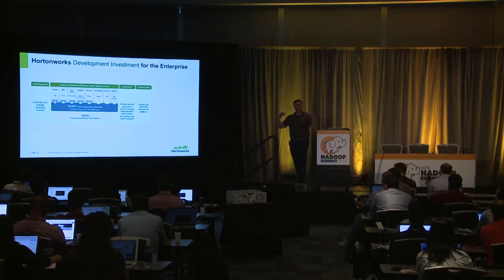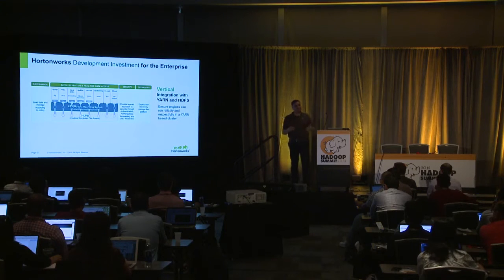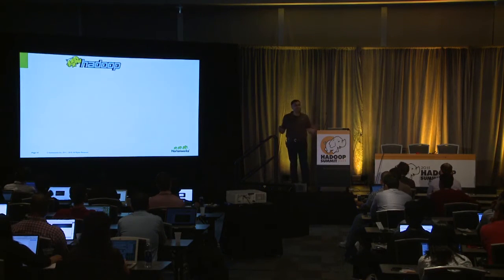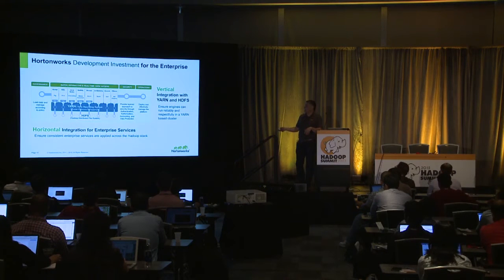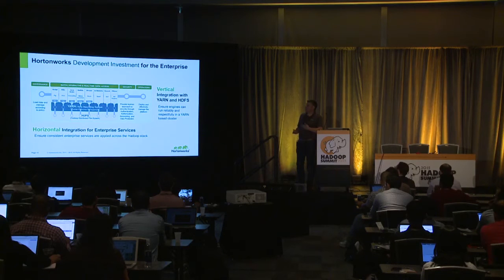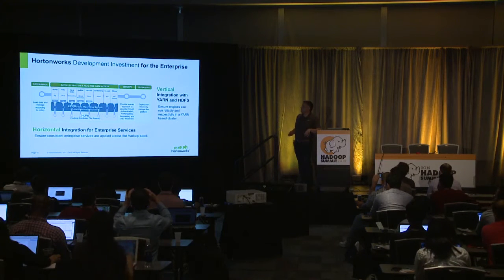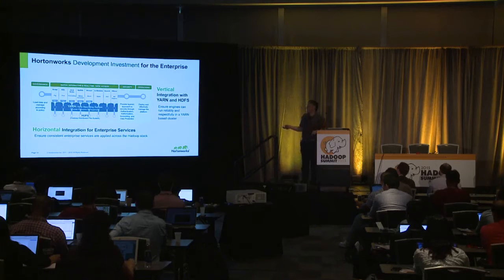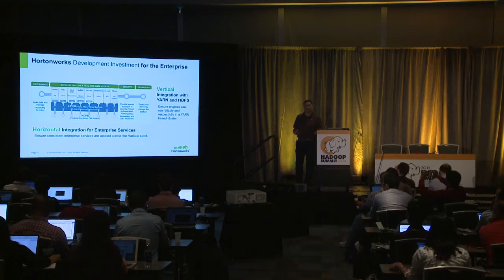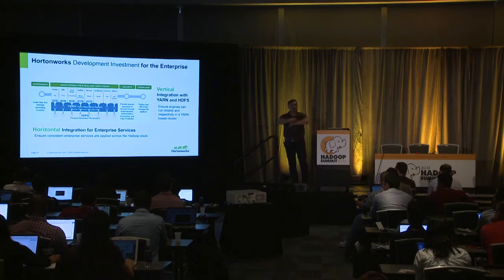Now let's drop down to the 10,000-foot level. If we look at those five pillars, we see our storage layer within Hadoop — that distributed storage environment called HDFS, the Hadoop Distributed File System, inspired from the Google File System. Our data operating system is called YARN. Then we have this whole collection of data access engines — whether you're doing SQL with something like Hive or real-time with Storm — these are the different tools that give you flexibility to work with different varieties of data. We wrap those with vertical integration: security, operations, and governance — enterprise features necessary to leverage this within an enterprise.